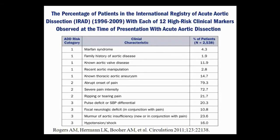The severity is also key — it goes to peak intensity immediately, not as a crescendo. It's 10 out of 10 right from the start. One thing that can fool you is that the pain can go away over time, so just because someone looks better in the ER doesn't mean you stop thinking about it. Ripping or tearing pain radiating to the back, with chest pain suggesting a proximal location, is classic. Pulse deficit or blood pressure differential also gives you a point.